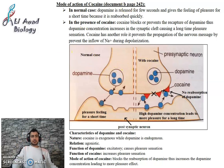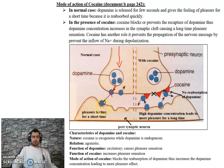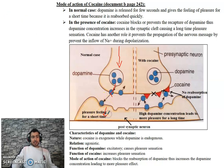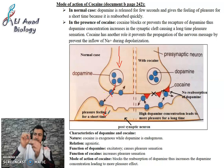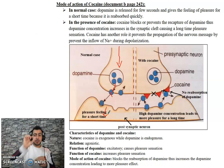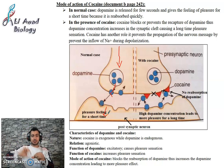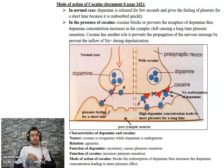In normal cases, when the action potential arrives, dopamine is secreted and released from the presynaptic terminal. It binds to its receptors on the postsynaptic membrane, leading to pleasure sensation. However, dopamine causes pleasure for only a short period of time because it binds and is quickly released.